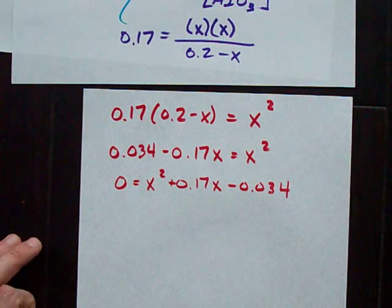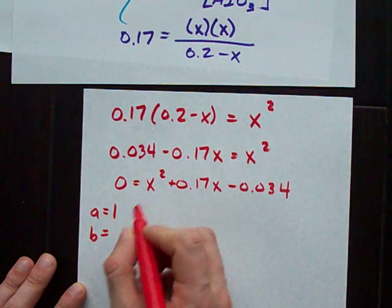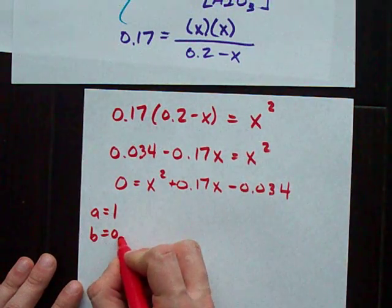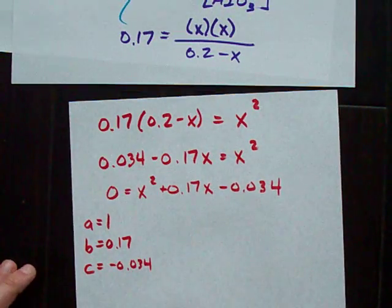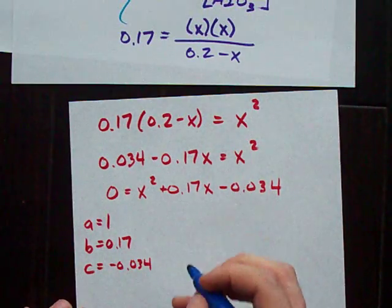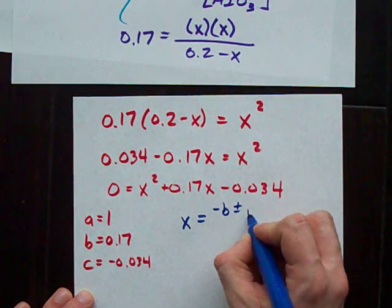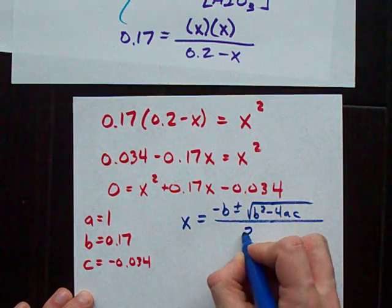And this, my friends, is a quadratic equation you can solve with a quadratic formula, where A is 1. That's the number in front of X squared. B is 0.17, and C is negative 0.034. Now, this is going to take a little bit, but do you remember the quadratic formula? The quadratic formula is negative B plus or minus the square root of B squared minus 4AC all over 2A. It's solving time!